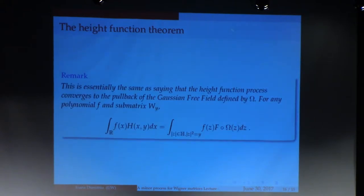All right. So now going back to the remark that I made about the height function and the Gaussian free field and the pullback. What I mean by that essentially is this. For any polynomial, but actually you don't have to stop at polynomials. You can do functions that belong to a certain Sobolev space. Integral of f of x, h of x, y, dx. So h of x, y being that height function which I defined previously, is going to be the integral over z, not absolute value of z. Z in the upper half plane on the semicircle. F of z, f composed to omega of z, dx. That's what the process, the height function process is defined as in the limit. As l goes to infinity.